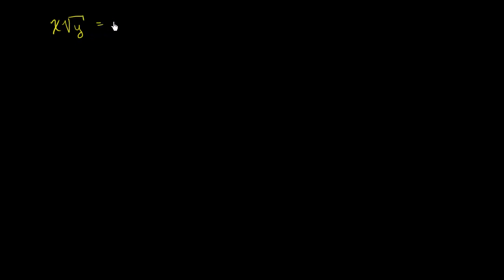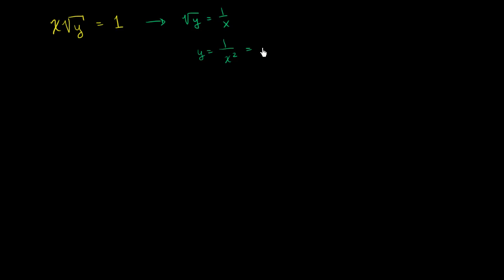So let's say that I have the relationship x times the square root of y is equal to 1. This one is actually pretty straightforward to solve for y explicitly in terms of x. If we divide both sides by x, we get square root of y is equal to 1 over x. And then if you square both sides, you get y is equal to 1 over x squared, which is the same thing as x to the negative 2 power.